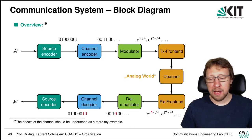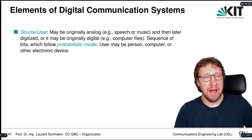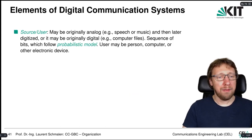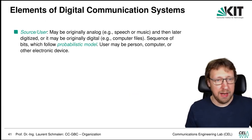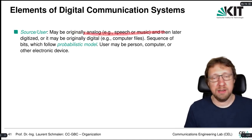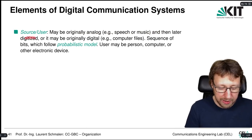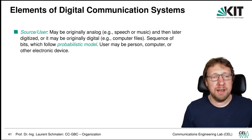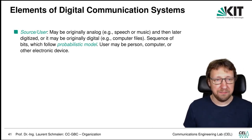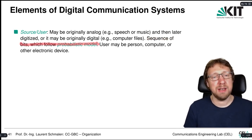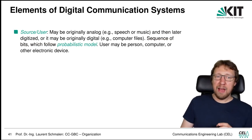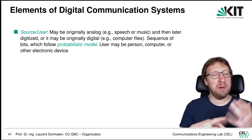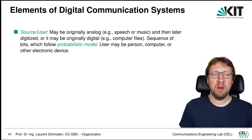Let's take a closer look at the different components of the communication system. The source encoder has a source and user that may be an analog signal — speech, music, video — which is then digitized, or it can be a digital signal immediately, like when transmitting a computer file. Importantly, according to Claude Shannon, the sequence of bits follows a probabilistic model: we don't know the data, and we assume the data is a random variable.